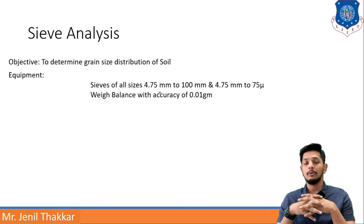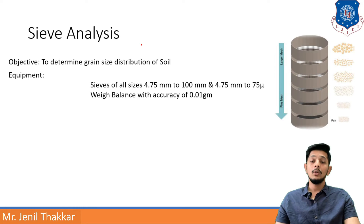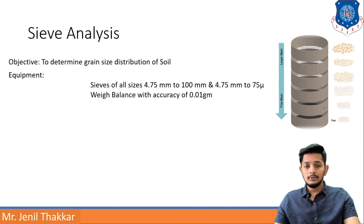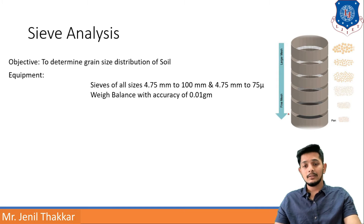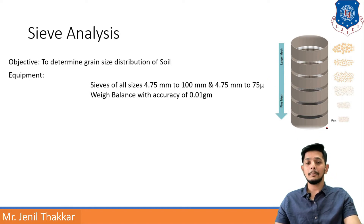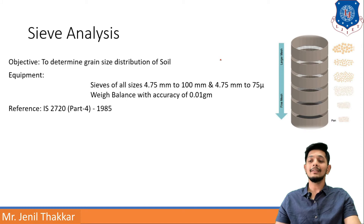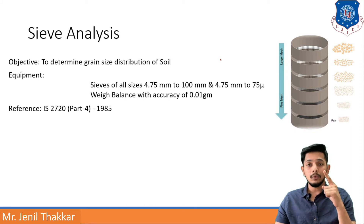The sieves are stacked into each other — one sieve, second sieve, third sieve, they fit into each other. Larger meshes retain larger particles, and smaller or finer meshes are below. At the last, a pan is kept which will not pass any type of soil — that is the receiver only. The reference is given by IS2720, Part 4, and this IS code suggests this procedure.